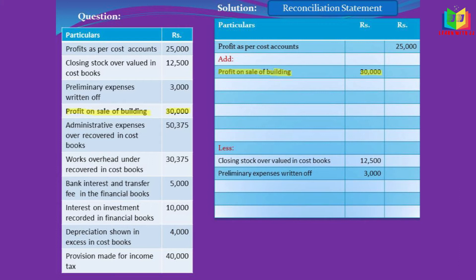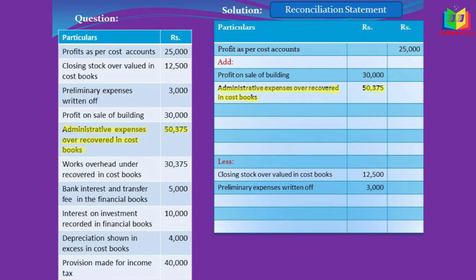The next item is profit on sale of building. This profit is financial income and appears only in the financial book, so in the cost book it is zero — income is understated. Understated income in the cost book will reduce the profit, so in order to rectify that, we will add it.